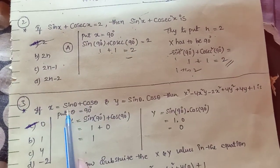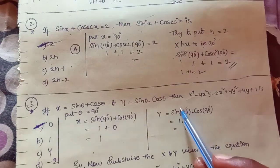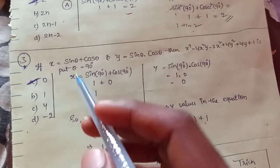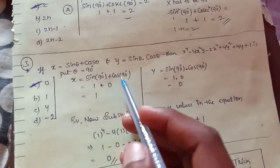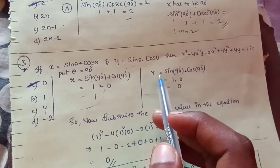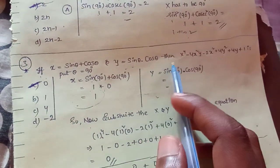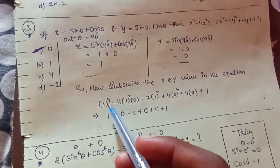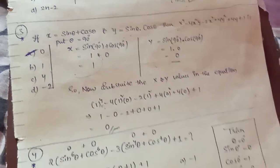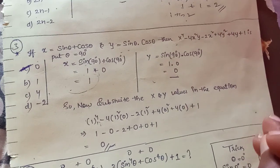Next: if x is equal to sin theta plus cos theta, and y is equal to sin theta into cos theta, find the value. Choose theta equal to 90 degrees. Then sin 90 is 1 plus cos 90 is 0, so x is equal to 1. And y is equal to sin 90 into cos 90 equals 1 into 0, so y is equal to 0. Simple to find out.